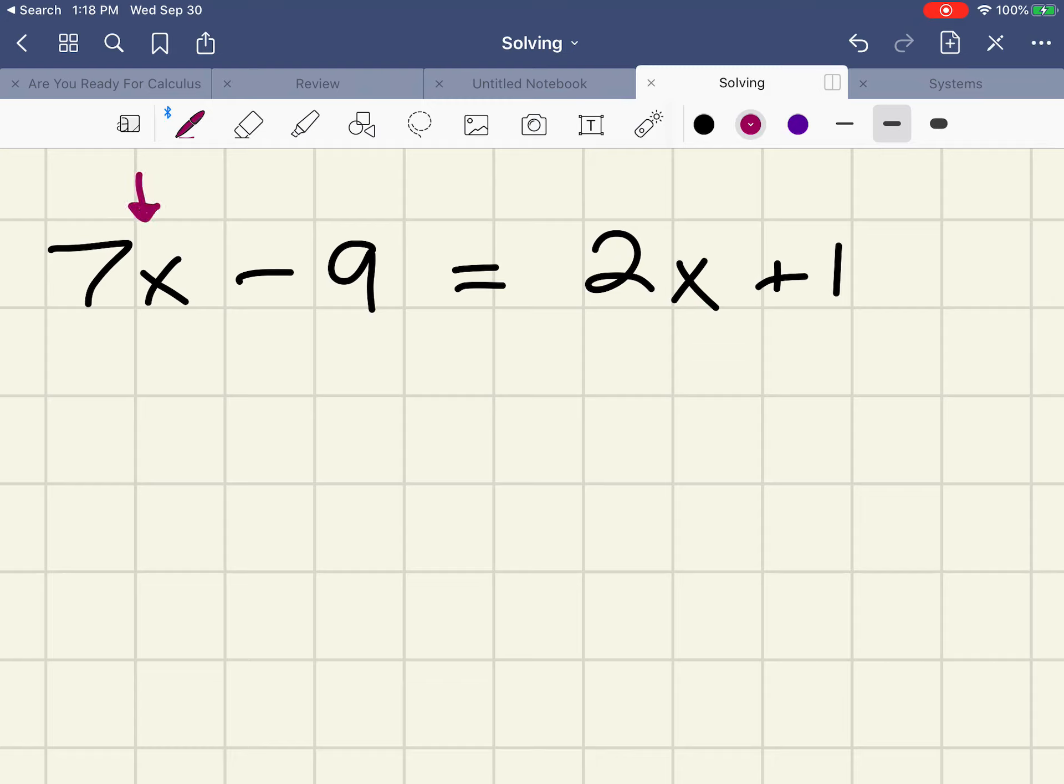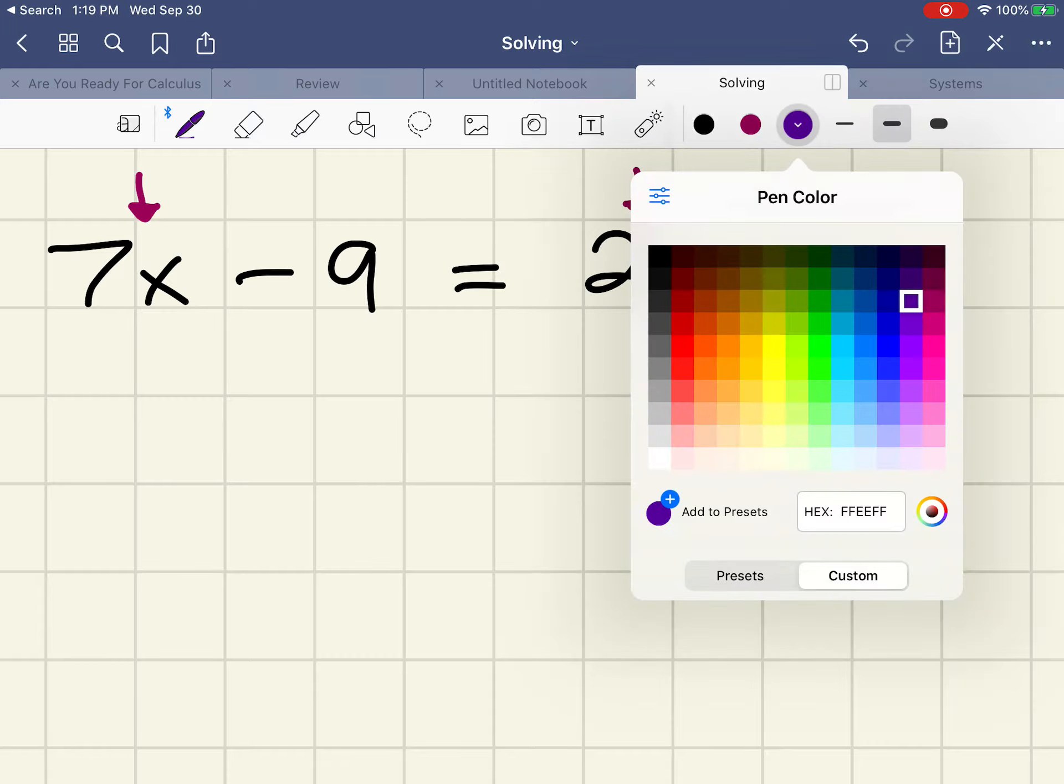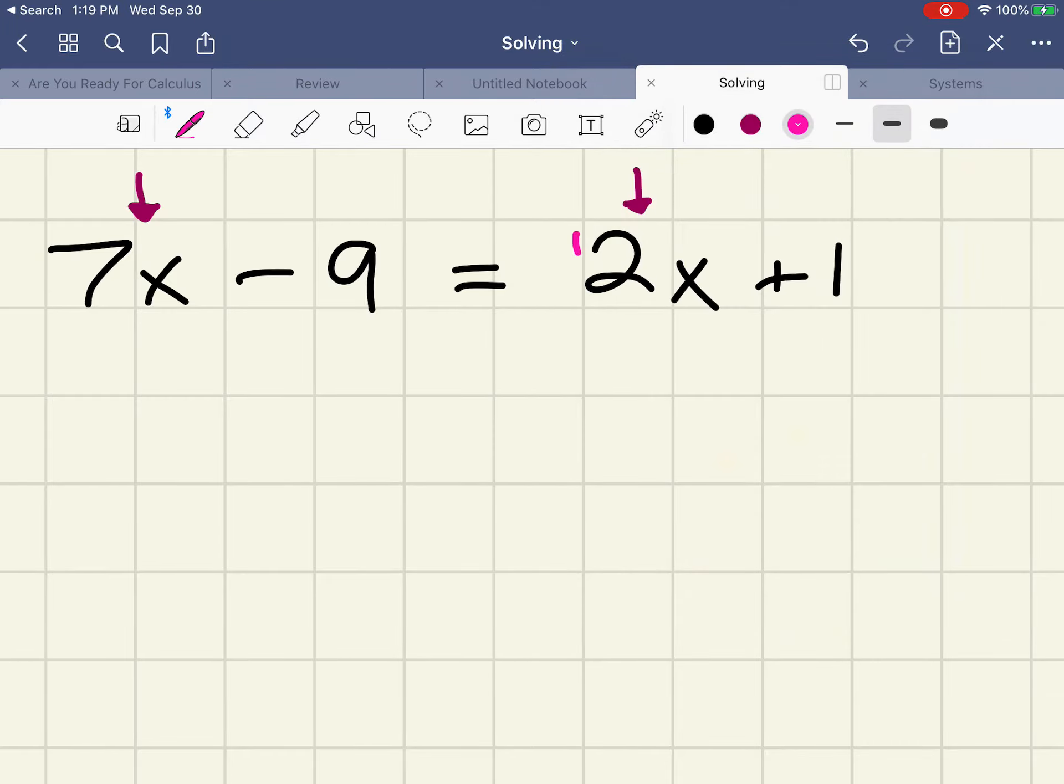We'll move either the 7x or the 2x. The way that we do that is we're going to do the same thing that we would do if it was just a number. I know that this is a positive 2x, and if I subtracted 2x from this side of the equation, these would cancel each other out.